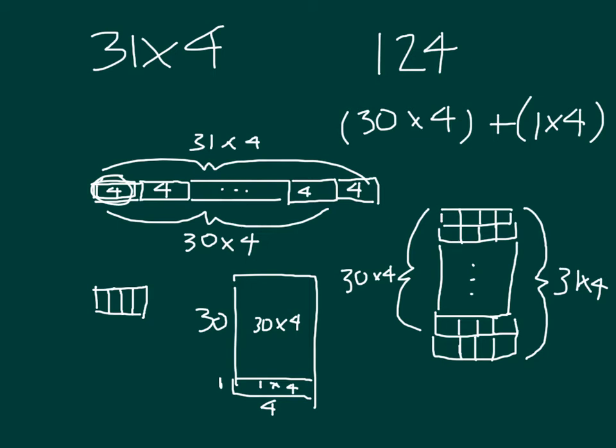Both of these models, and all of these models, show how it is that we could go ahead and look at 31 times 4.